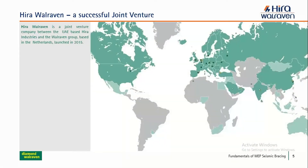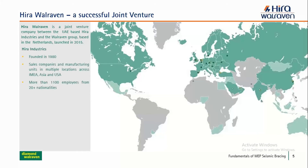HeroWarEven is a successful joint venture from two companies. It originated from a company based in the UAE — Hero Industries and Hero Group — and in 2015 created a joint venture with WarEven Group based in the Netherlands to form a more efficient company that can solve more complex problems. Hero Industries was founded in 1980 with sales companies and manufacturing units across IMEA, Asia, and the USA, and currently employs more than 1,100 employees from over 20 nationalities.